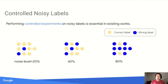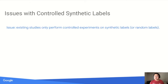Controlled experiments play a critical role in studying noise labels. Like developing a new drug, we need to conduct controlled experiments to test a single variable at a time. In our problem, the most important variable to test is the noise level, which indicates the percentage of examples with incorrect labels. Here, we show three datasets of noise levels at 20, 40, and 80%. As a result, controlled experiments are performed in many existing works. However, existing studies only perform controlled experiments on synthetic labels, and real-world noise has never been studied in a controlled setting.